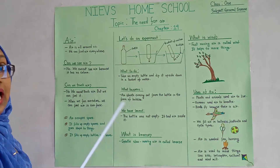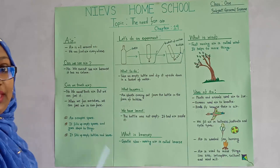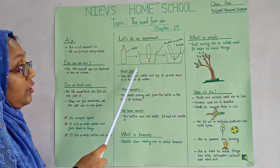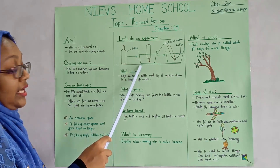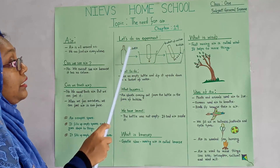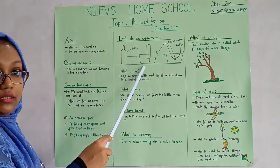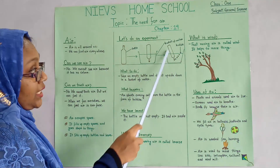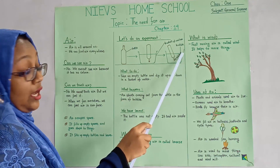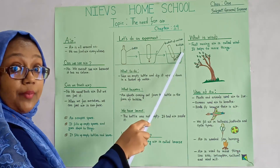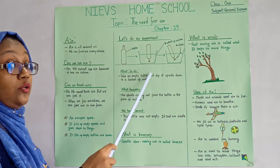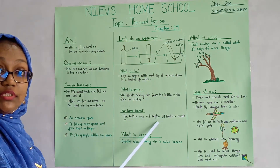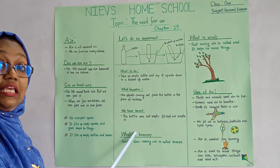Now let's do an experiment. For this experiment, we have taken a bottle. Then we have taken a bucket of water and dipped the bottle upside down in the bucket of water. Look here — air is coming out in the form of bubbles. From this experiment, we have learned that the bottle wasn't empty; it had air inside it.